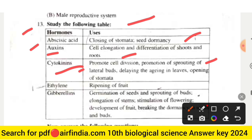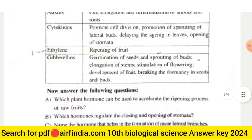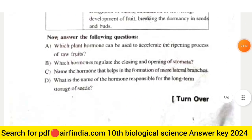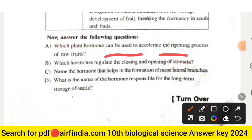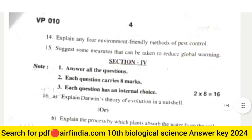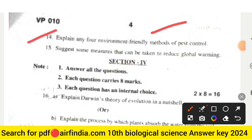Continuing Question 13 table: Ethylene — ripening of fruit. Gibberellin — germination of seeds and sprouting of buds, elongation of stems, stimulation of flowering, development of fruit, breaking dormancy in seeds and buds. Answer questions: (a) Which plant hormone can be used to accelerate the ripening process of raw fruits? (b) Which hormone regulates the closing and opening of stomata? (c) Name the hormone that helps formation of more lateral branches. (d) What is the name of the hormone responsible for long-term storage of seeds?